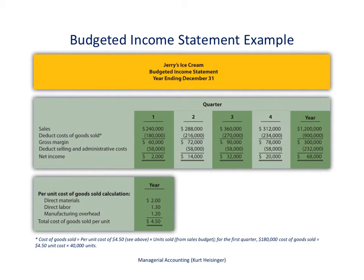Now we'll look at the budgeted income statement for Jerry's Ice Cream. Since we just left the selling and administrative cost budget, let's tie the two together first. On the previous slide, budgeted selling and administrative costs totaled $58,000 for each quarter — that's exactly what appears on this line of the income statement, $58,000 per quarter and $232,000 for the year.